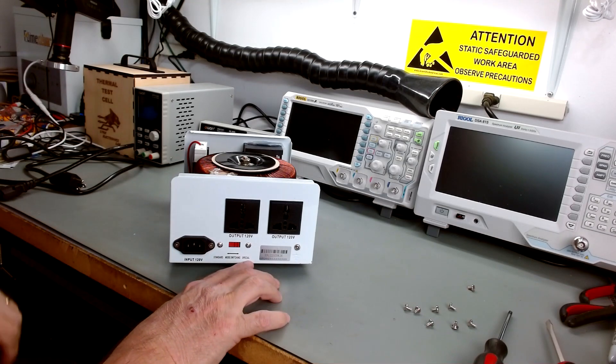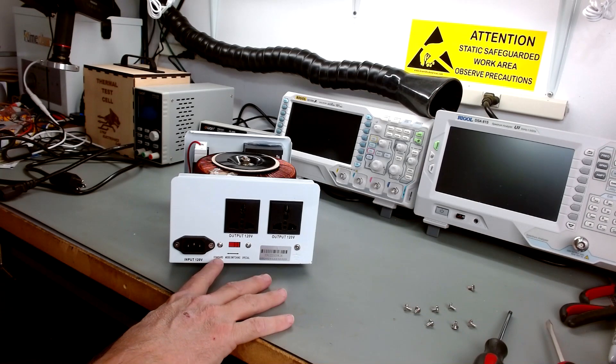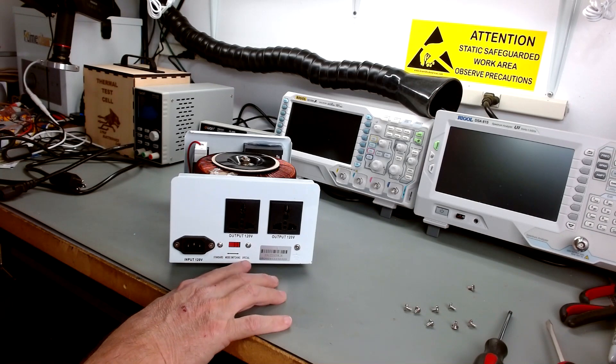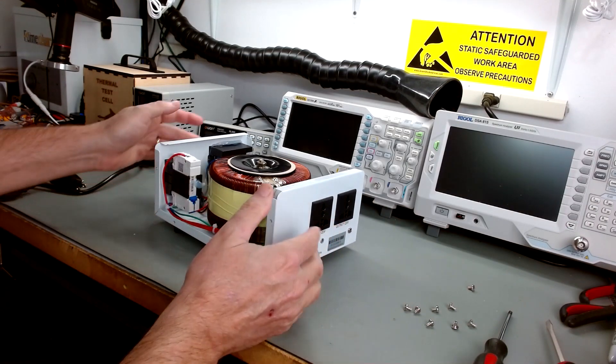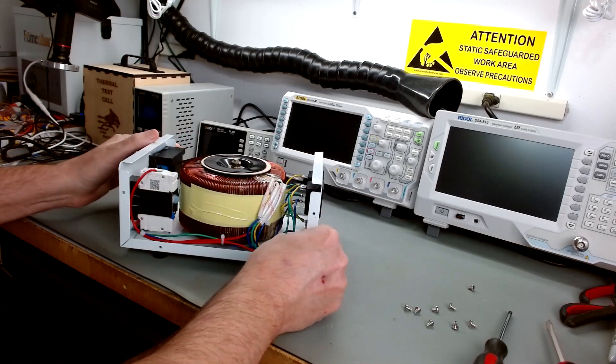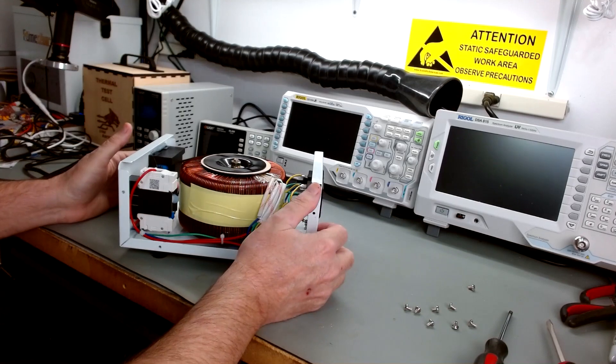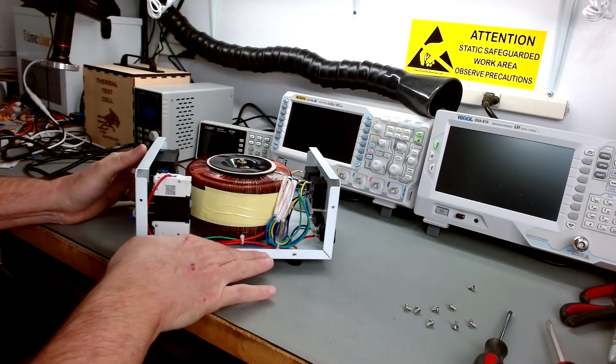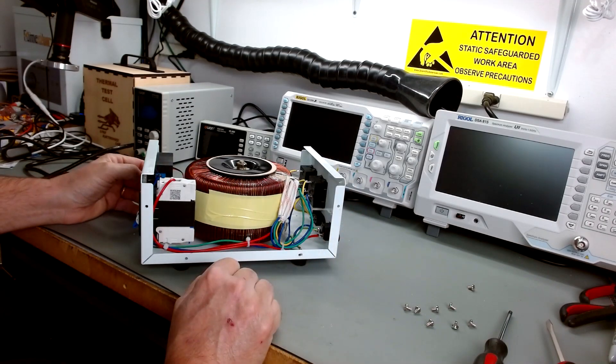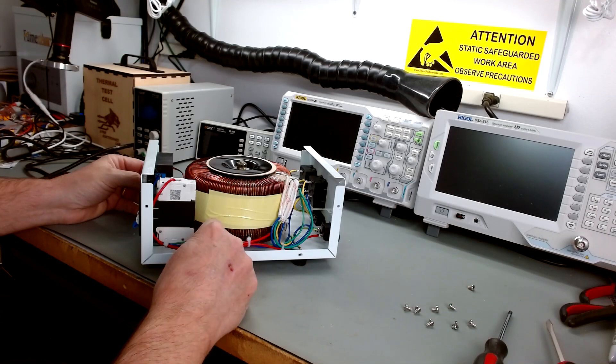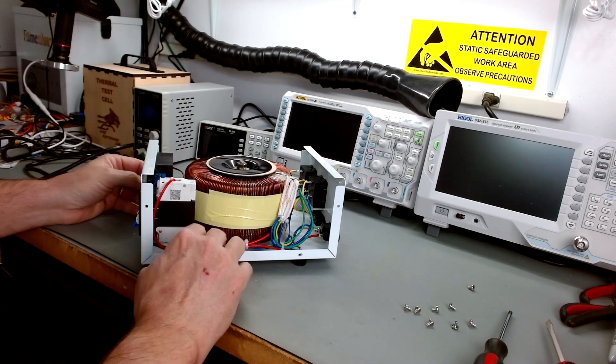This is the switch I was talking about. You have a standard and a special mode. Standard allows the ground to pass through, continues to pass the ground through. The special cuts off the ground so that you have no, nothing from the line side, the supply side passes through to the output. This thing is a one KV rated. It's not as heavy as my Variac. And you can see the cables are a little smaller gauge, but still looks efficient for 10 amps.